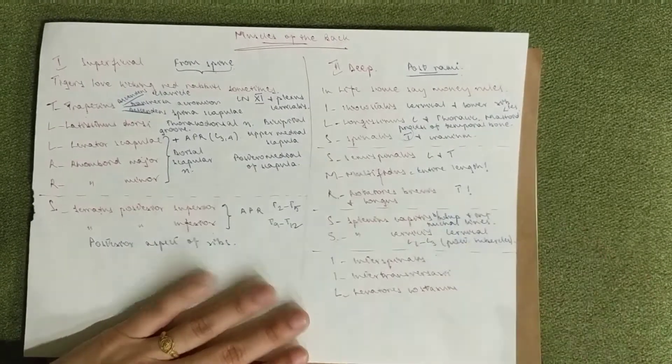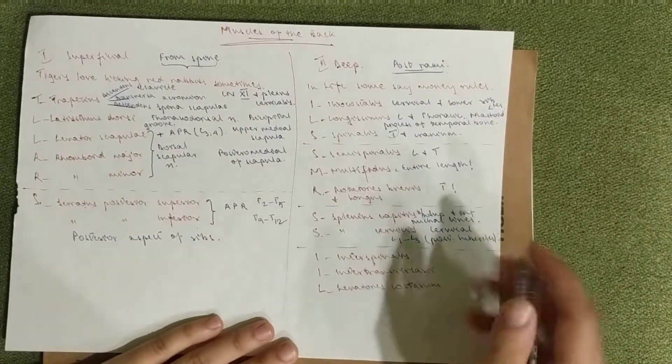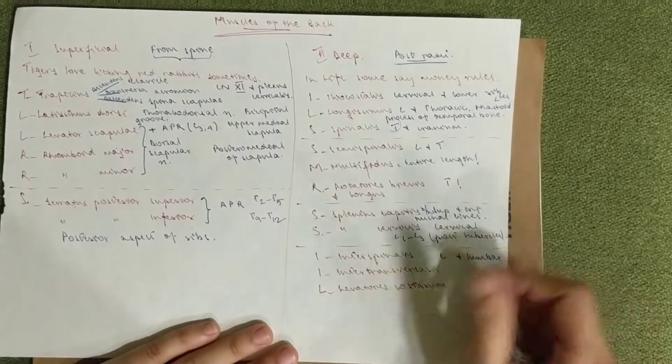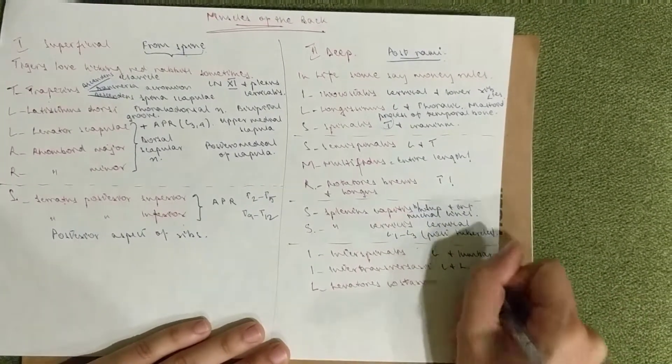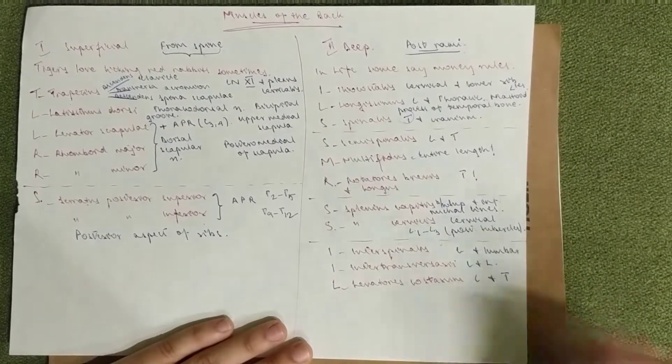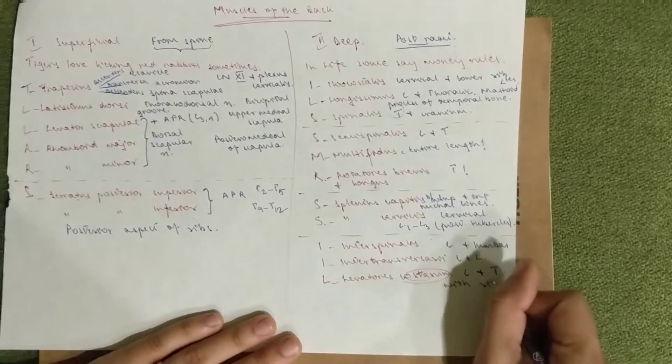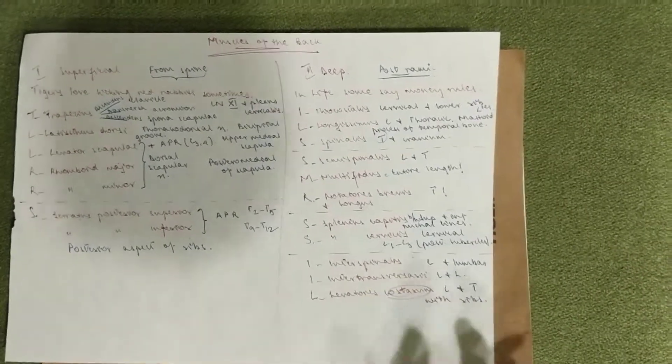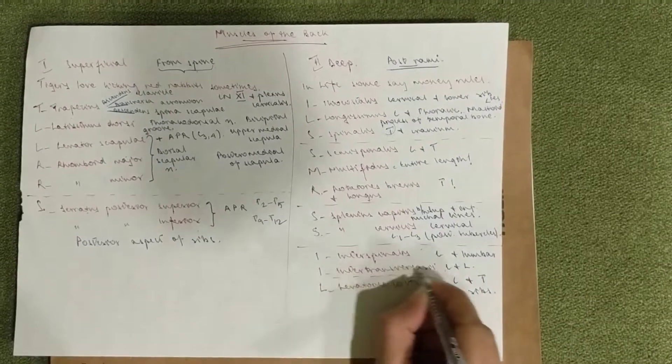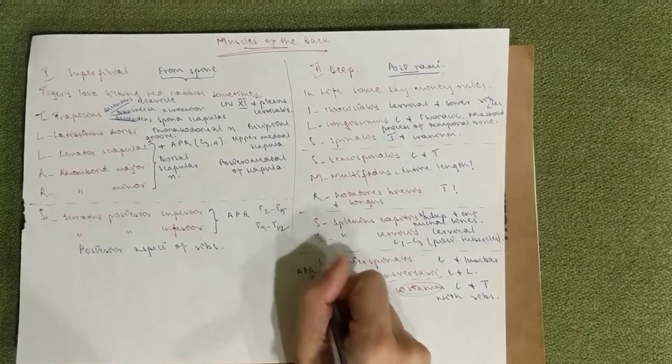The interspinalis goes to the cervical and lumbar, so does the intertransversarii, C and L. The levator costarum goes to C and T with the ribs. They go to the spinous processes. Even though all of them are posterior rami, the intertransversarii also has innervation from the anterior primary rami.